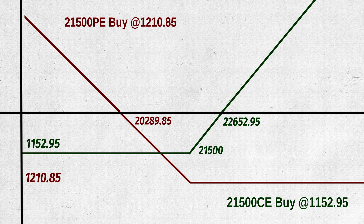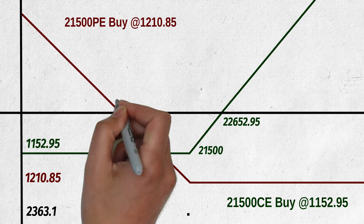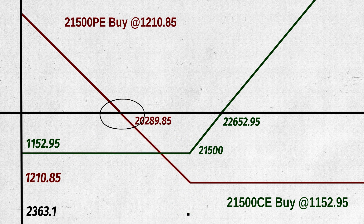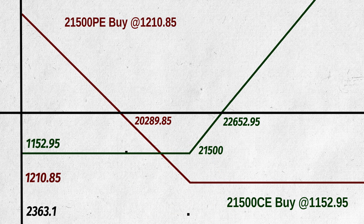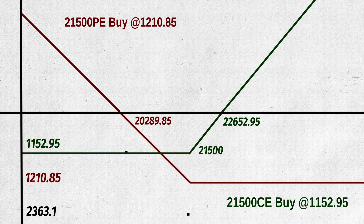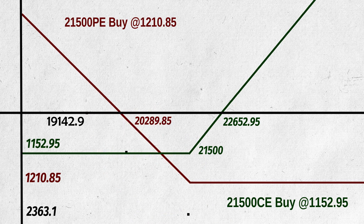If price closes at 21,500 at expiry, loss is both the premiums, that is 2,363.1 times 25 per lot. If price closes at 20,289.85, this is the breakeven for put option, but the call option is at loss, so the loss is 1,152.95. The breakeven on the downside is the price falling to the sum of both premiums from 21,500, so 21,500 minus 2,363 equals 19,142.9 is the breakeven point at the downside.